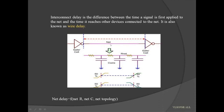From the figure we can clearly see here. This is the wire, this is the so-called net. Here we are applying the signal. The difference between the time at which the signal is applied here and the time it reaches this device which is connected to this net — the delay in the signal is due to the parasitic resistance and capacitance, which are present internally in the wire.